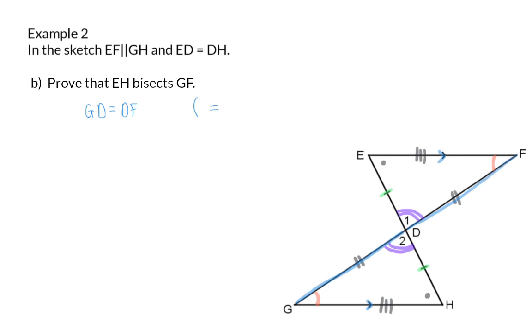The reason for this is our congruent triangles. And because we now know that these two parts of line GF are equal, we can say that line EH bisects line GF.